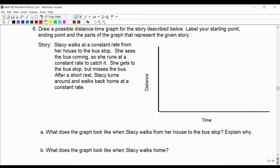Stacy walks at a constant rate from her house to the bus stop. She sees the bus coming, so she runs at a constant rate to catch it. She gets to the bus stop but misses the bus. After a short rest, Stacy turns around and walks back home at a constant rate.